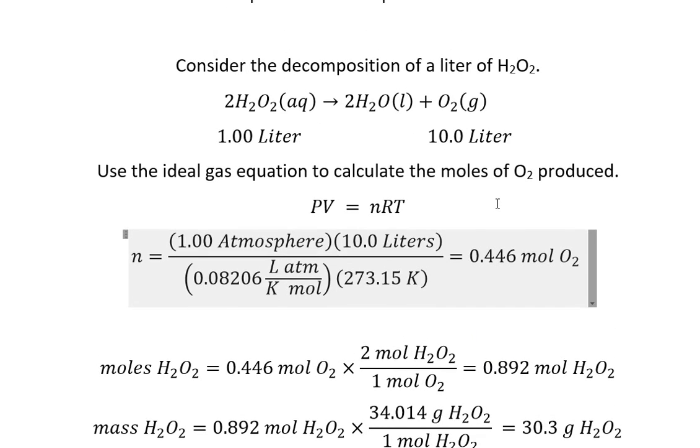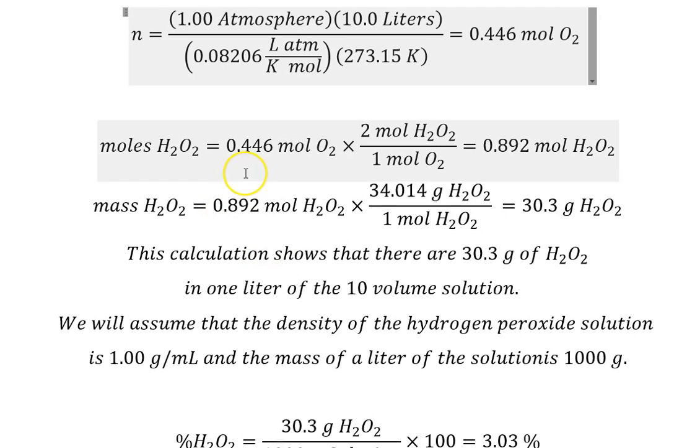Now, using the stoichiometry, we know that for every mole of oxygen, we must use two moles of hydrogen peroxide. To get the moles of hydrogen peroxide, we use the factor label method, and we get twice as much hydrogen peroxide as we got oxygen. That's how much hydrogen peroxide must have been in that one liter of solution.